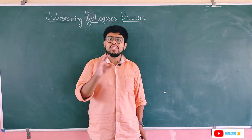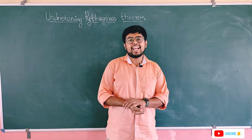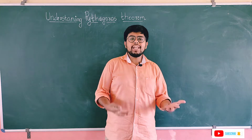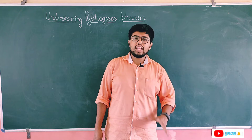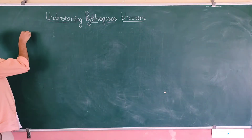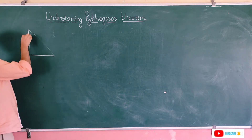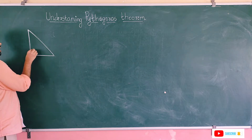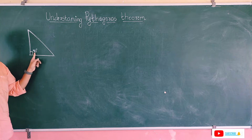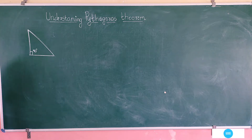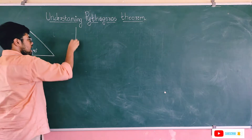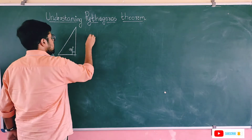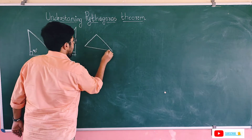Pythagoras theorem is applied to a right angle triangle. What is a right angle triangle? We know there are varieties of triangles — equilateral, isosceles, scalene. Similarly, we have a right angle triangle. In a right angle triangle, one angle is 90 degrees. This line and this line make 90 degrees; they are perpendicular to each other. The perpendicular side can be positioned in different orientations.